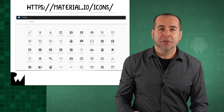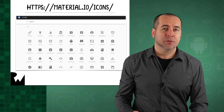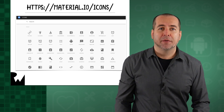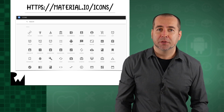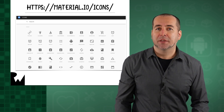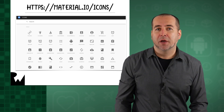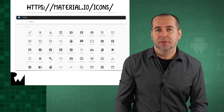Google provides a large number of vector drawable assets on the Material Design website. Vector drawables start off as vector images in tools such as Adobe Illustrator. They are exported as SVG files and then imported into an Android project by right-clicking on the ResDrawable folder and selecting New Vector Asset.